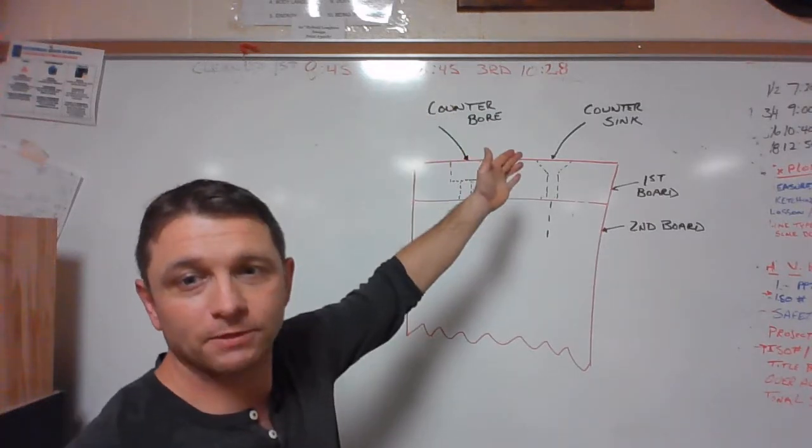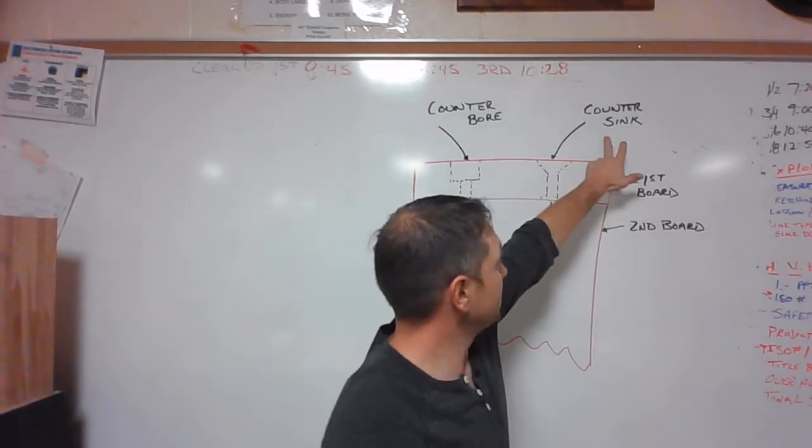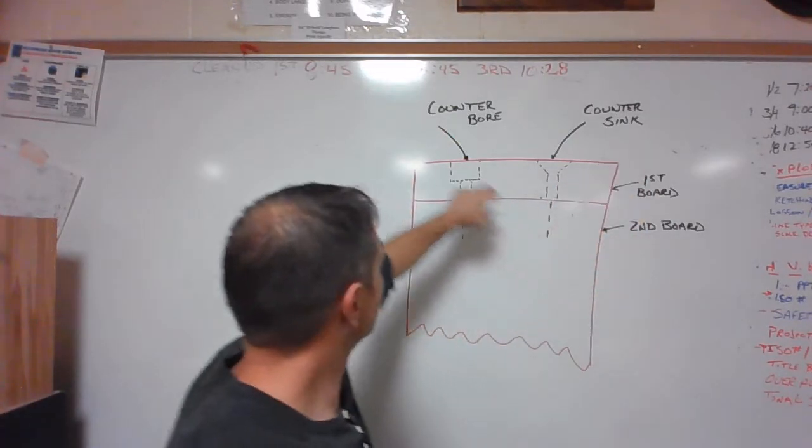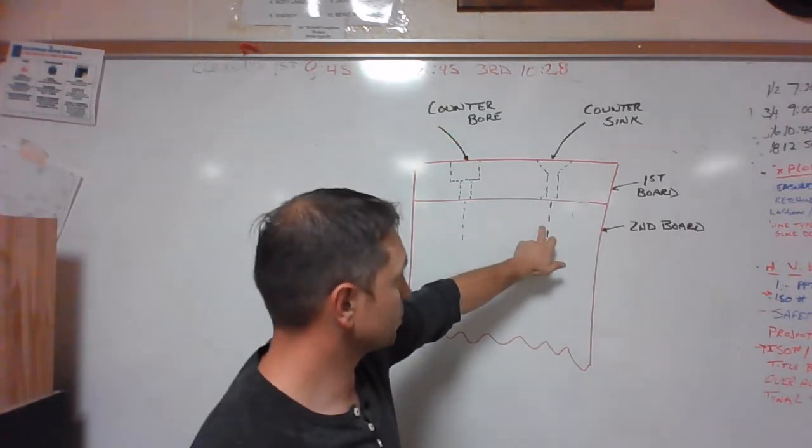You can do this with two different types of first drilled holes: one being a counter bore hole or one being a counter sink hole. These holes are exactly the same, which we will go over what they are and how they exist.